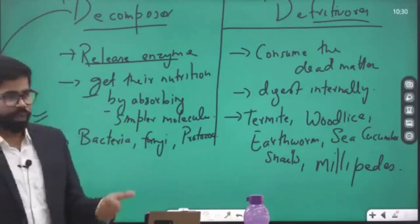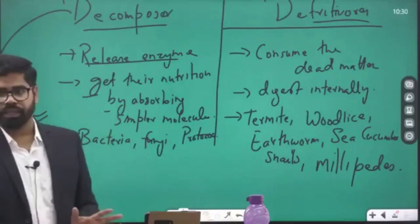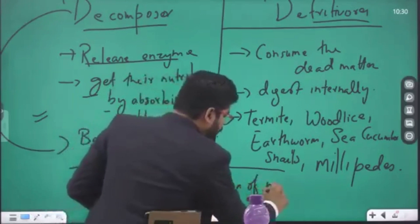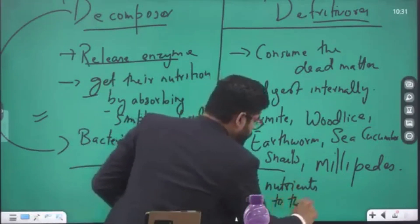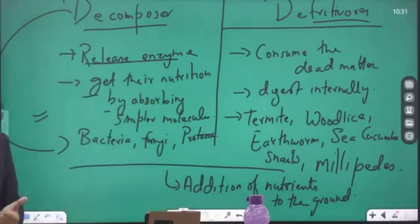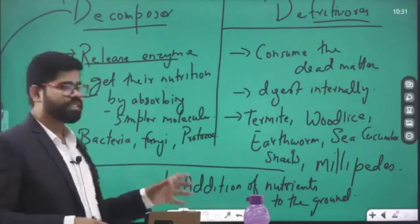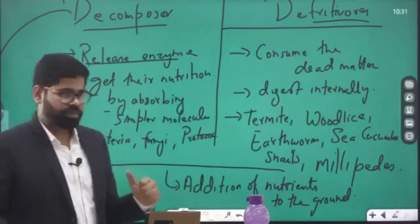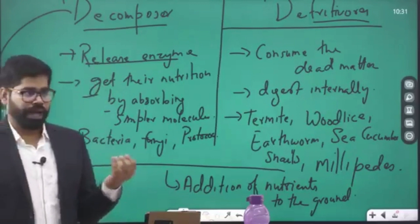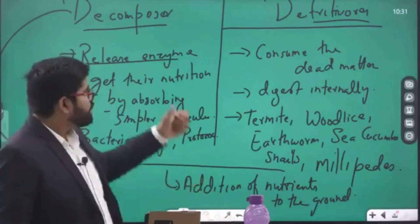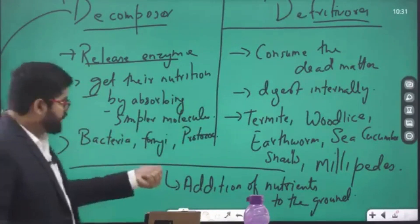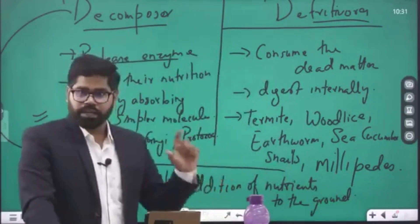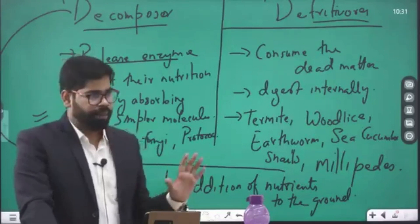In both cases, there will be addition of nutrients to the ground — that is a very important point. The soil is enriched with nutrients by the action of decomposers or detritivores. Earthworms are regarded as very important for agriculture because they feed upon dead biomass and release those nutrients back into the ground. So both decomposers and detritivores feed on dead and decaying matter, and their examples are clear.